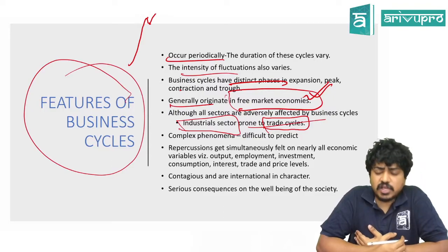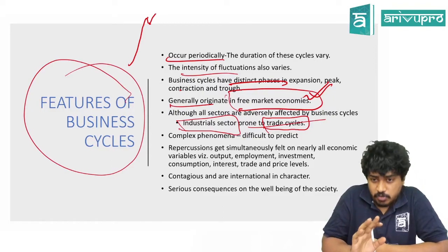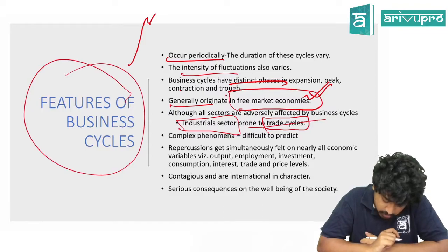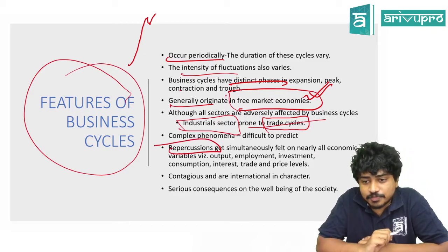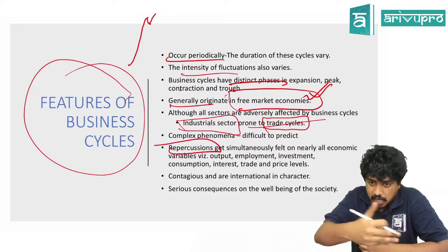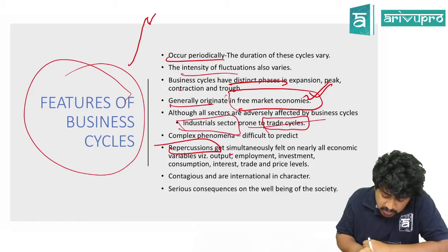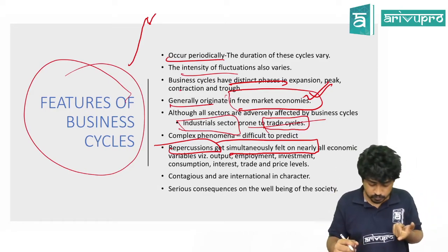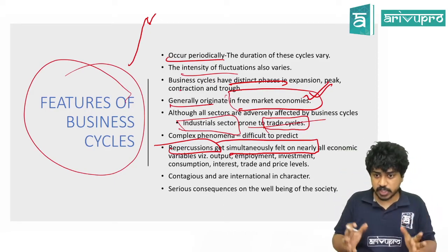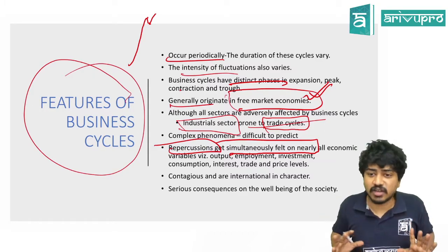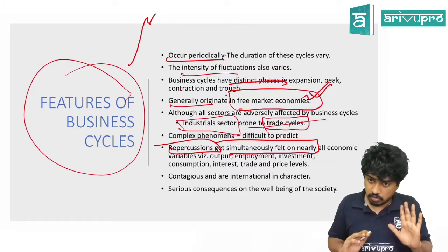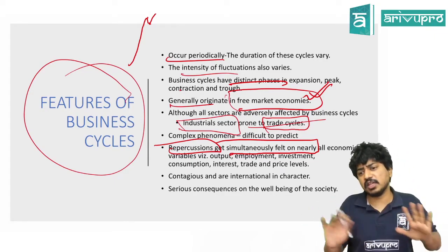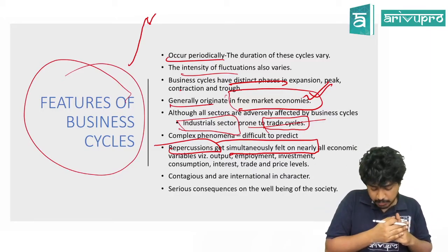Business cycle is a complex phenomenon and difficult to predict. Repercussions — side effects — are simultaneously felt on all economic variables. It not only affects output; in a trade cycle, output is affected, employment is affected, interest rates, trade prices — everything gets affected simultaneously.